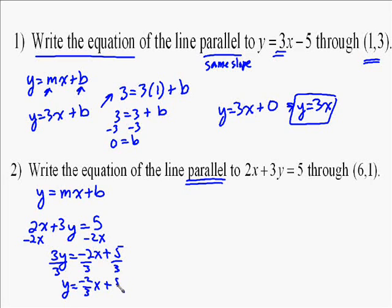So the slope of the line is negative 2-thirds. That's the slope of our line that we're trying to get a parallel line to, so that must be the slope of our line.